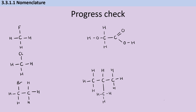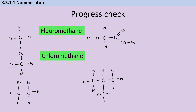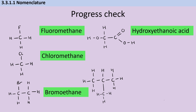Time for another progress check — pause the video and see if you can name these five molecules. The first two are quite easy. They're both based on the smallest alkane, methane, so we've got fluoromethane and chloromethane. Then we've got a slightly longer carbon chain: two carbons would be eth, so this is going to be bromoethane. Then we've got the slightly complicated situation where we have a carboxylic acid on the right-hand side and a hydroxy group on the left-hand side — so this is going to be hydroxyethanoic acid. Make sure you've got eth because you've got two carbons; you include both even though one is part of the functional group. And lastly, this would be a propane molecule but we've added a methyl group, so this is methylpropane.